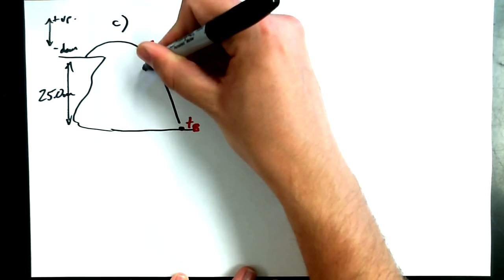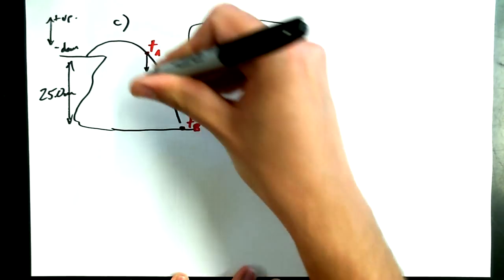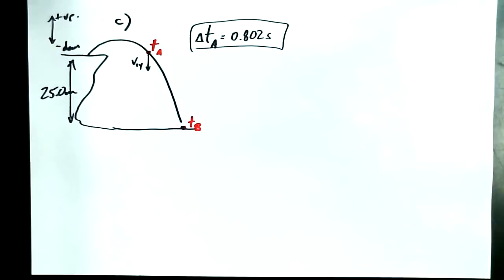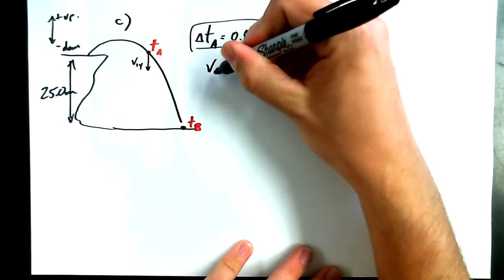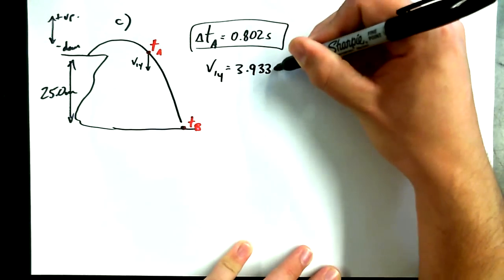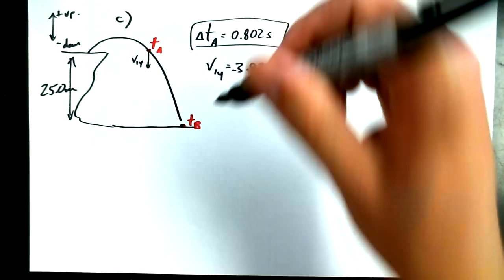What was it? Do you remember? It's 0.802 seconds. And we found that by calculating how long it takes to get back down to the same height again. And now we want to find delta T-B. So, I'm going to set this off to the side. That's some information for later.